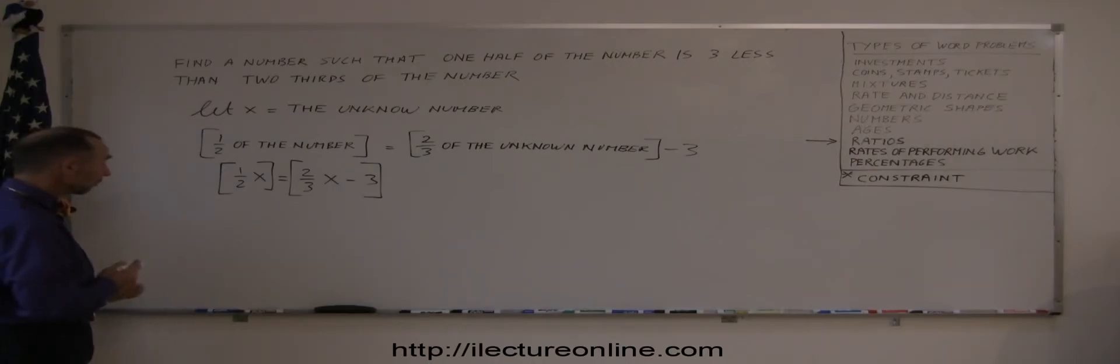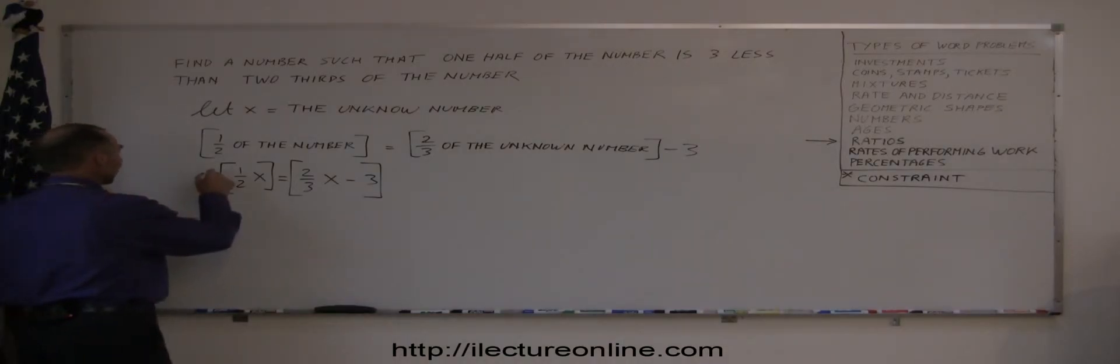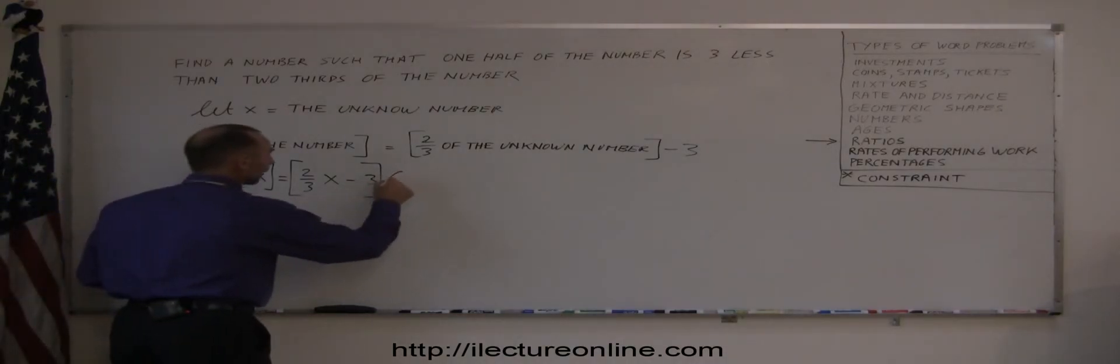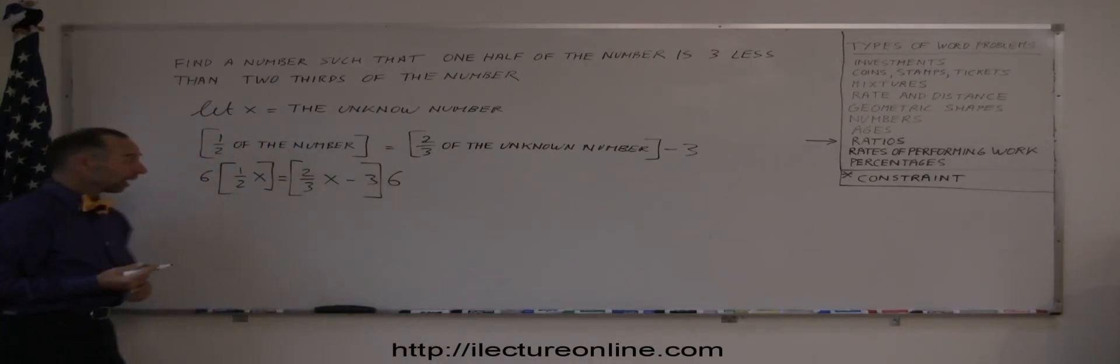So we're going to multiply both sides of the equation by six, six being the lowest common denominator.